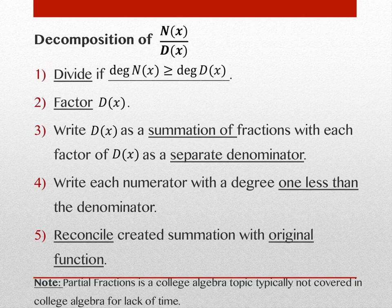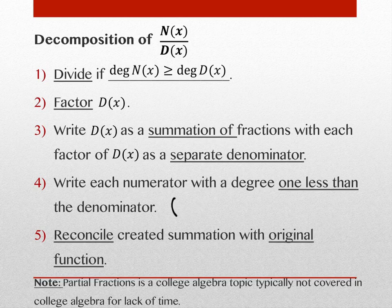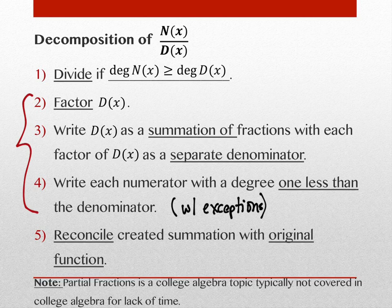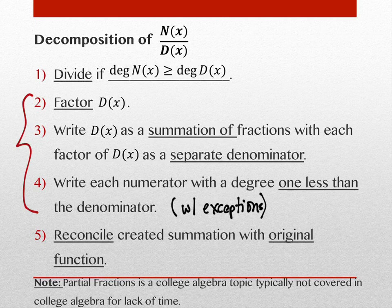Step two is to factor the denominator — it usually happens pretty quickly. Step three is to write the denominator as a summation of fractions with each factor of d(x) as a separate denominator. Step four is to write each numerator with a degree one less than the denominator, with exceptions we'll see. Step five is to reconcile the created summation with the original function. Steps two through four go very fast; step five is where we spend the bulk of our time. This really isn't calculus — we need this algebra concept in order to find integrations we otherwise wouldn't have a good way to do.